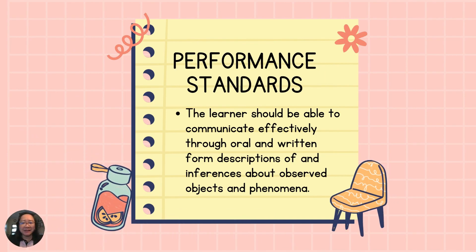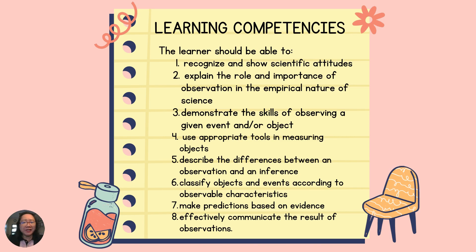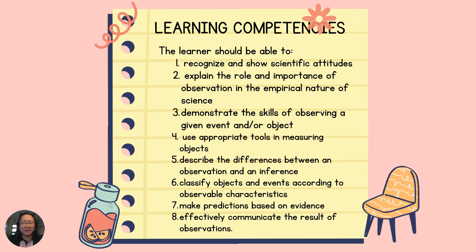For the performance standards, the learner should be able to communicate effectively through oral and written form descriptions of and inferences about observed objects and phenomena. Learning Competencies: The learner should be able to 1) recognize and show scientific attitudes; 2) explain the role and importance of observation in the empirical nature of science; 3) demonstrate the skills of observing a given event or object; 4) use appropriate tools in measuring objects; 5) describe the difference between an observation and an inference; 6) classify objects and events according to observable characteristics; 7) make predictions based on evidence; 8) effectively communicate the result of observations.